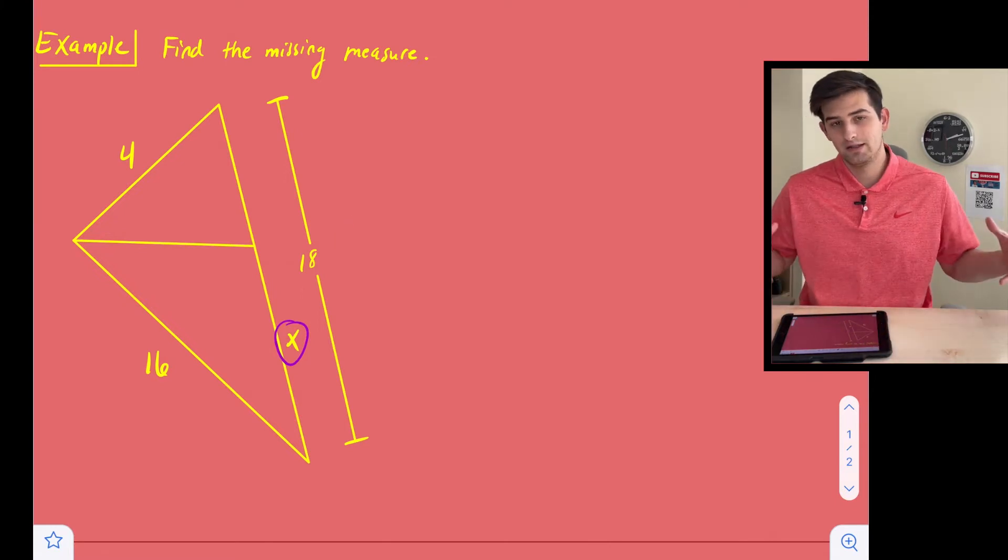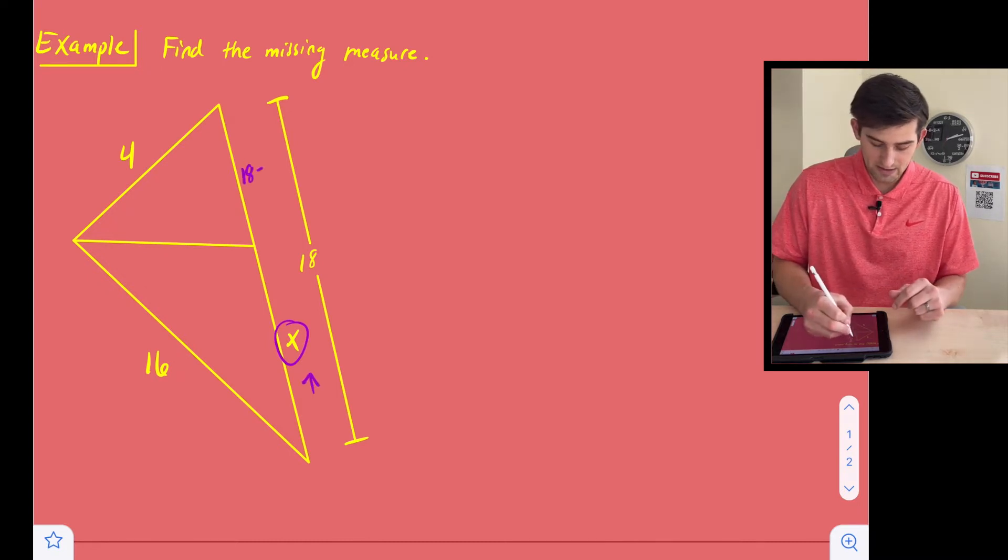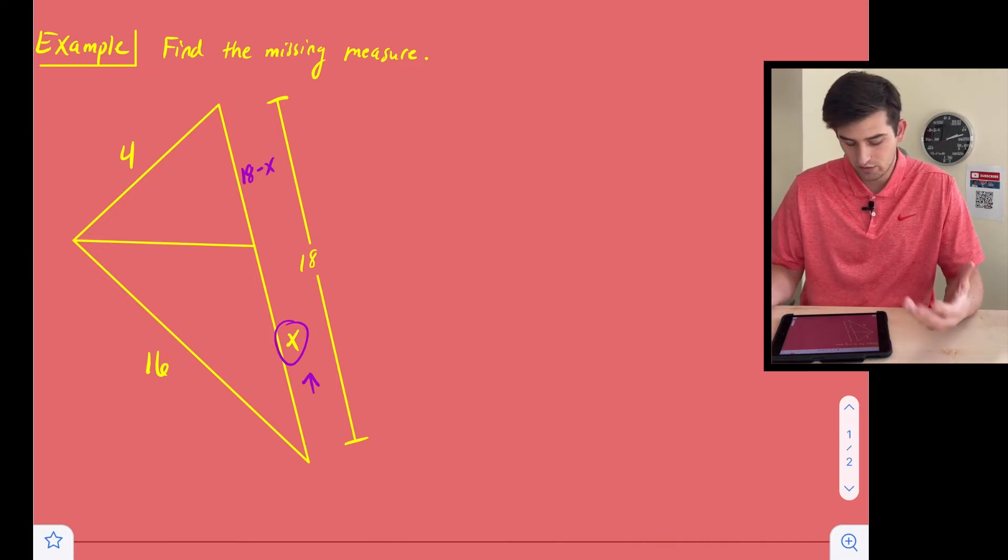So we know if the entire length is 18, this length down here is X. This part right here must be 18 minus X. And so we can use that expression in our ratio or in our proportion now.